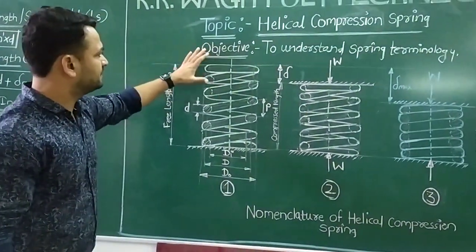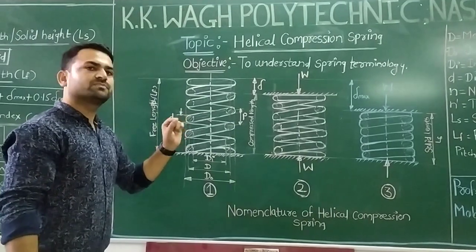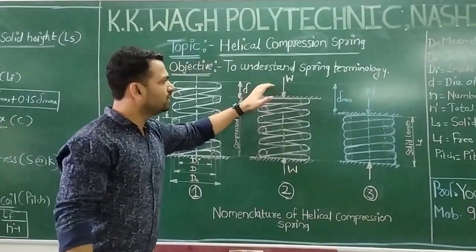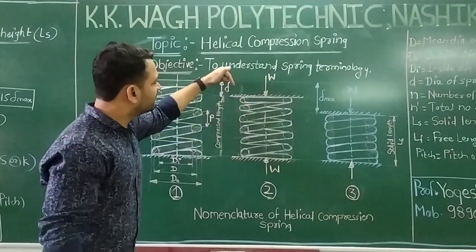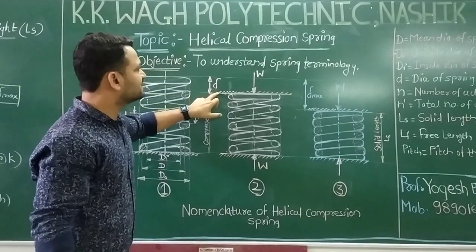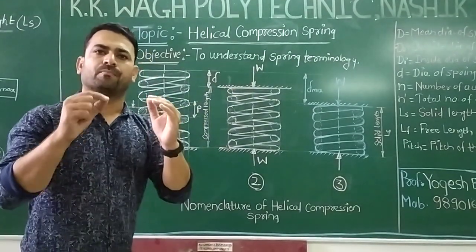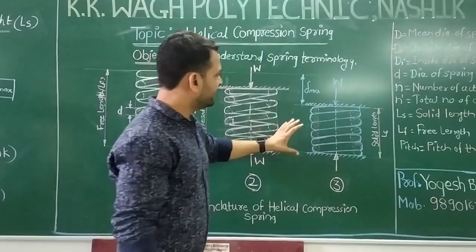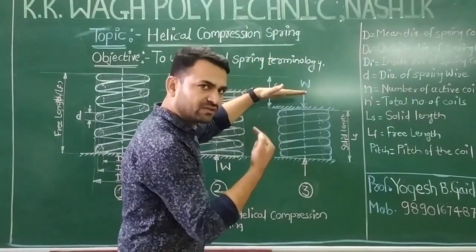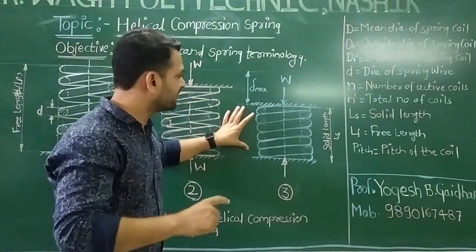The first diagram indicates when the spring is in the unloaded condition. When load is applied on the spring it deflects, and deflection is denoted by delta (δ). If you apply maximum load on the spring, each and every coil will touch each other and it becomes a solid length.